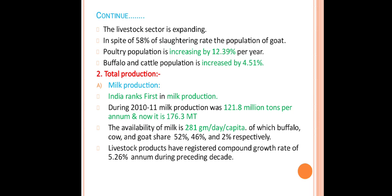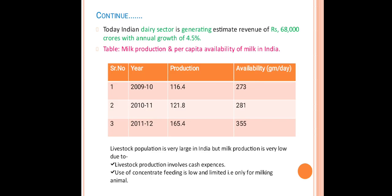Livestock products have registered a compound growth rate of 5.26 percent per annum during preceding decades. Today the Indian dairy sector is generating estimated revenue of 68,000 crores with an annual growth of 4.5 percent. The following table shows milk production and per capita availability of milk in India, with the first column showing year, second showing production, and third showing availability in grams per day.